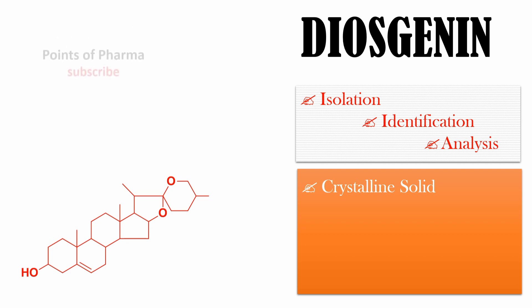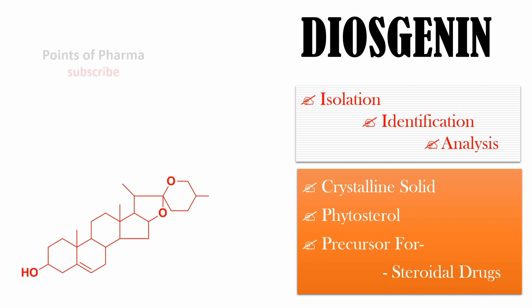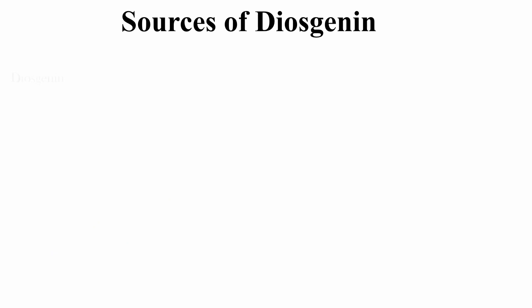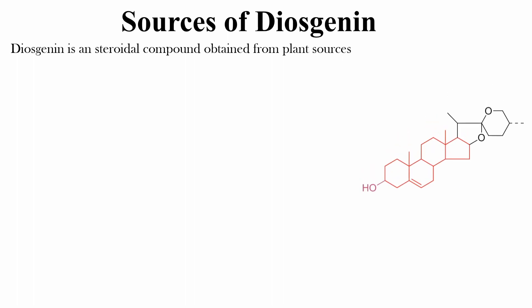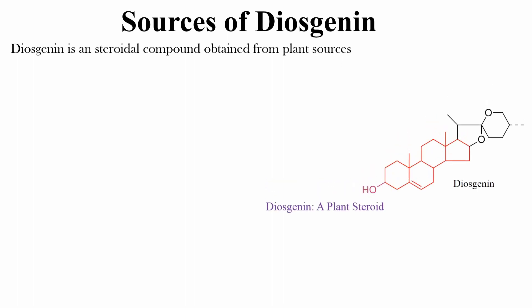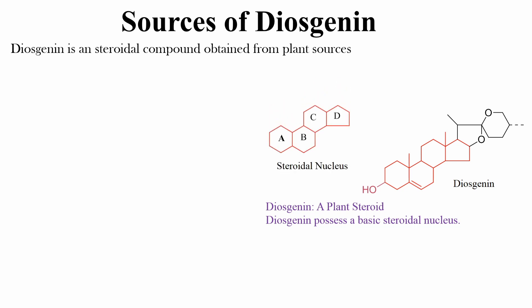Diosgenin is a crystalline solid. It is a phytosterol having usage as a precursor for the synthesis of steroidal drugs. Diosgenin is a steroidal compound obtained from plant sources, meaning it is a plant steroid. Its structure possesses a basic steroidal nucleus — a characteristic arrangement of four cycloalkane rings called A, B, C, and D.